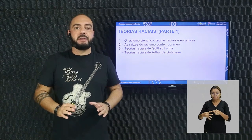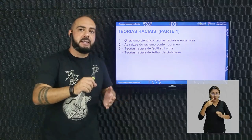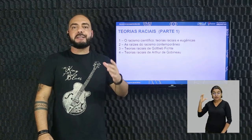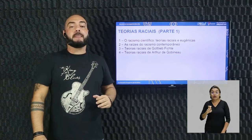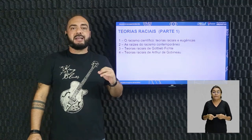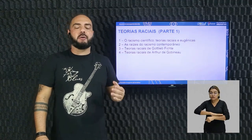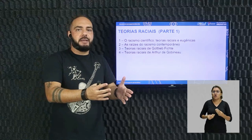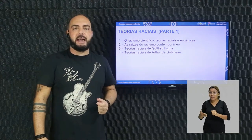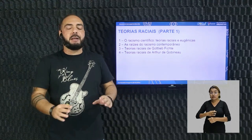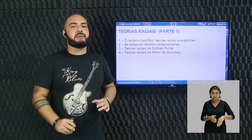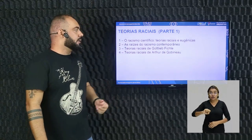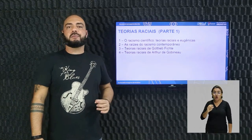Os quatro tópicos da aula: primeiro, o racismo científico, teorias raciais e eugênicas; segundo, as raízes do racismo contemporâneo; terceiro, a teoria de Gottlieb Fichte; e quarto, a teoria de Arthur de Gobineau. São os dois teóricos que abordaremos hoje. Na parte 2 falaremos também sobre outros autores.